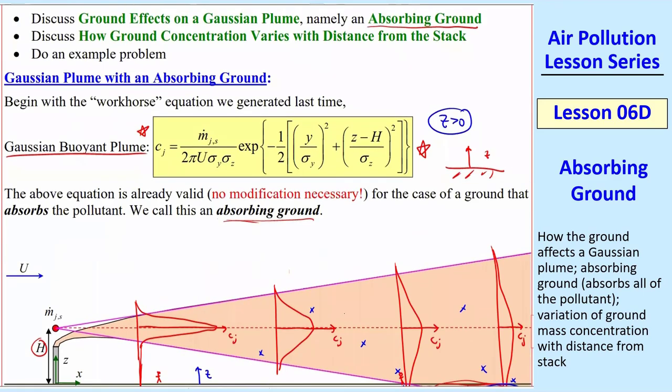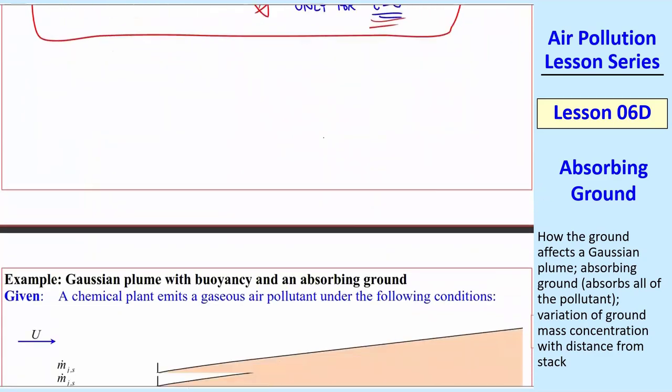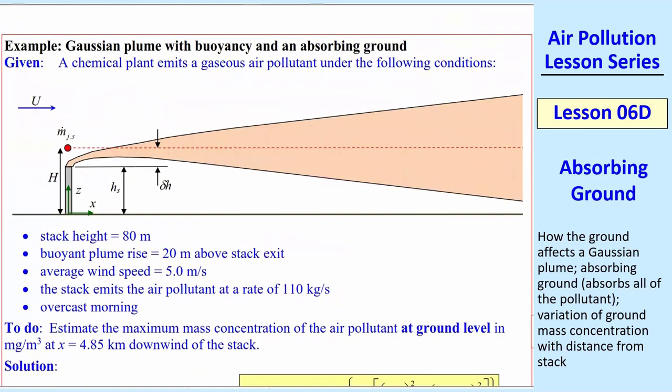The only difference is that we're going to put a restriction that z has to be greater than zero because it doesn't make sense to calculate anything where z is below zero because that would be in the ground, and we don't care what's going on in the ground. So the bottom line is that we can use the same equation. No modification is necessary except we limit ourselves to z greater than zero or limiting ourselves above the ground.